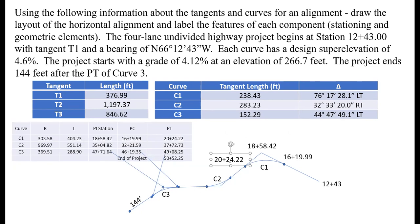We were told that the project ends 144 feet after that PT of curve three, so our final point here is 50+52.25. Now we've drawn, laid out, and labeled the features. We didn't fully lay out everything because we're working with a tighter space, but if we were doing this on a separate piece of paper we'd want to label all the PCs, PIs, PTs of each of the curves and the stations of those.